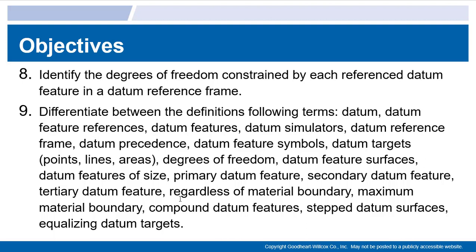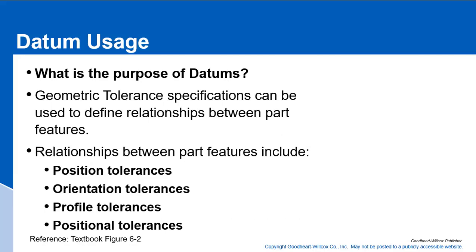We're going to talk about our terms here. You should have your objectives in front of you when you're going through this presentation, and make sure you note these terms that come up. Datum usage — what is the purpose of datums? Geometric tolerance specifications can be used to define relationships between part features, including positional tolerances, orientation tolerances, and profile tolerances. That's what datums are for — they are used to define these features so you can reference those in geometric dimensioning and tolerance blocks.